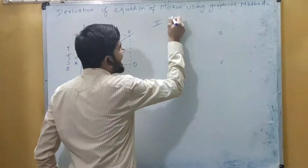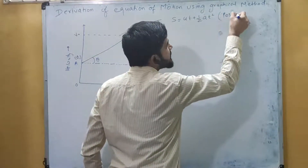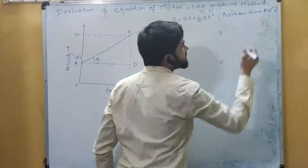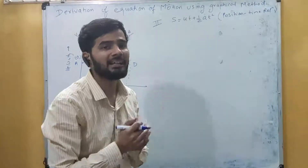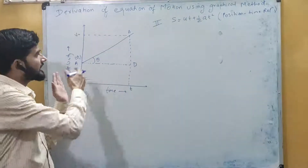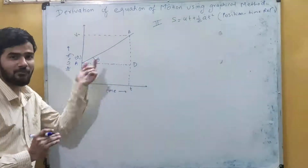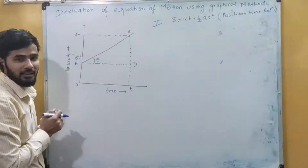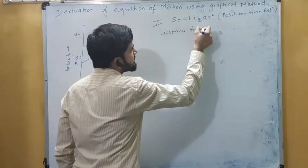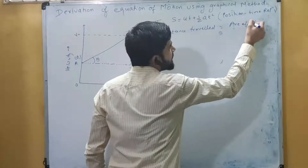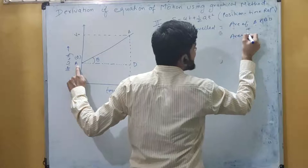The second equation of motion is s = ut + ½at², also called the position-time relation. We derive this using the second conclusion: to calculate the distance traveled, we calculate the area under the curve. The graph contains two areas — a triangle and a rectangle — so the distance traveled equals the area of triangle ABD plus the area of rectangle ADCO.